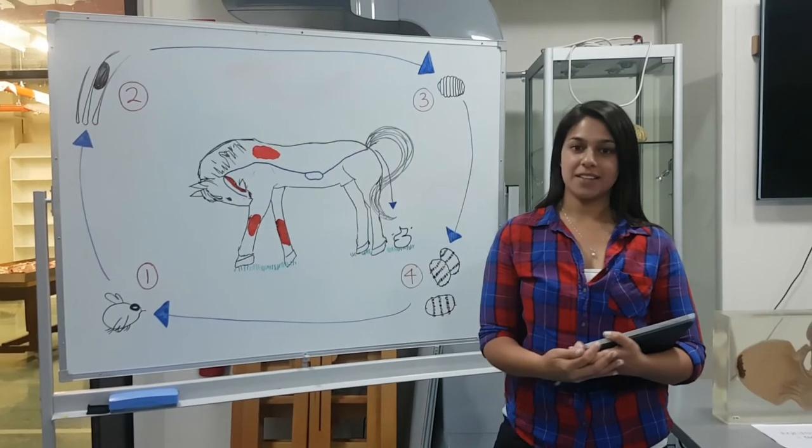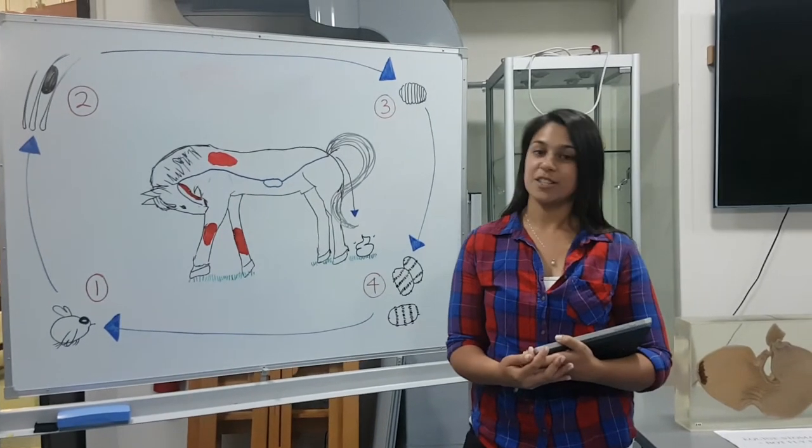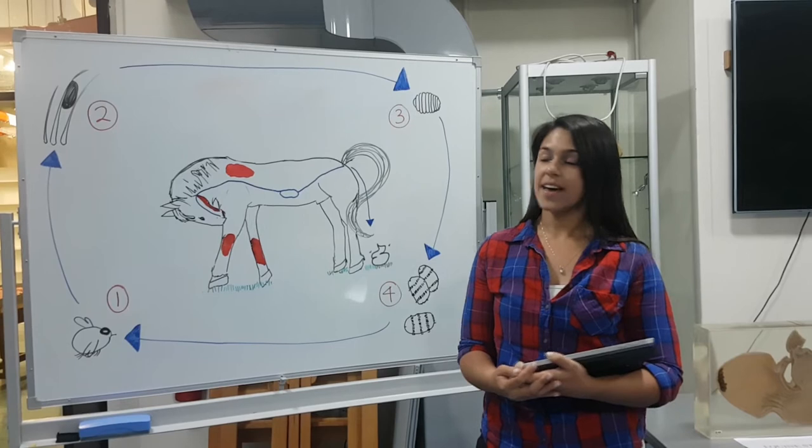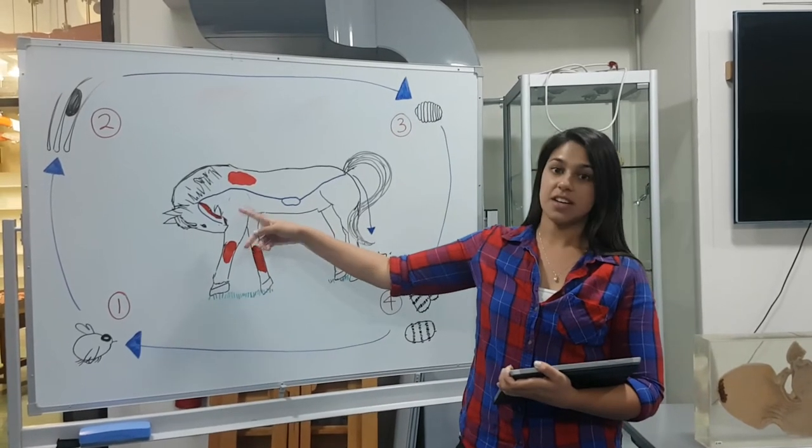Depending on where you live in the world, the botfly life cycle occurs between August to May, and they can lay up to a thousand eggs. They'll lay the eggs around the legs, the chin, and the shoulders.